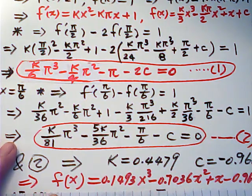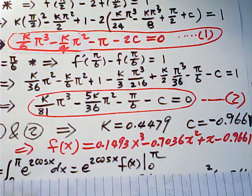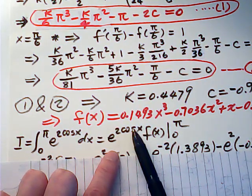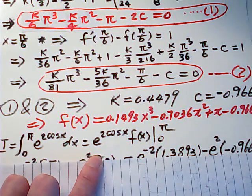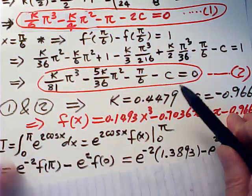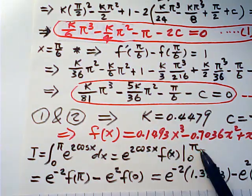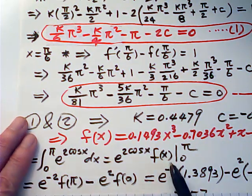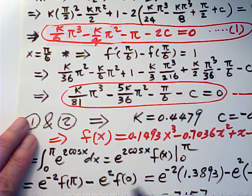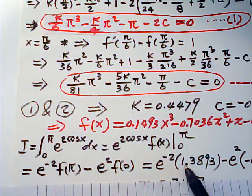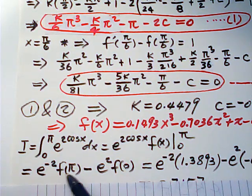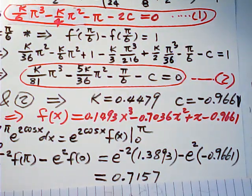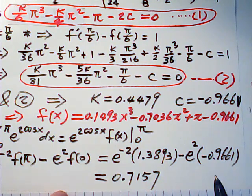I approximate into four decimal places. Then we can solve for our integral. Our integral is e to the 2 cosine x times f(x) from zero to pi. Then as x equals pi, this is negative one. So e to the negative two times f of pi, minus, this is equal to one, right? The e to the square, multiply by f of zero. So then we calculate the value. We get 0.7157 approximately to four decimal places.